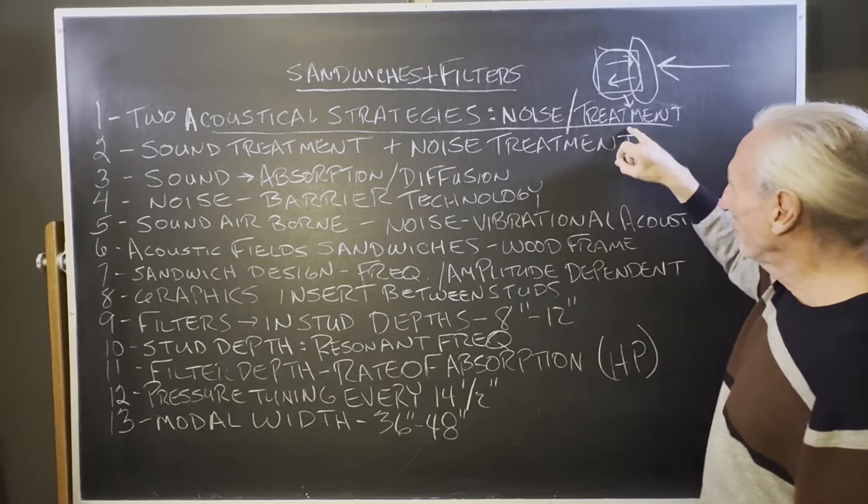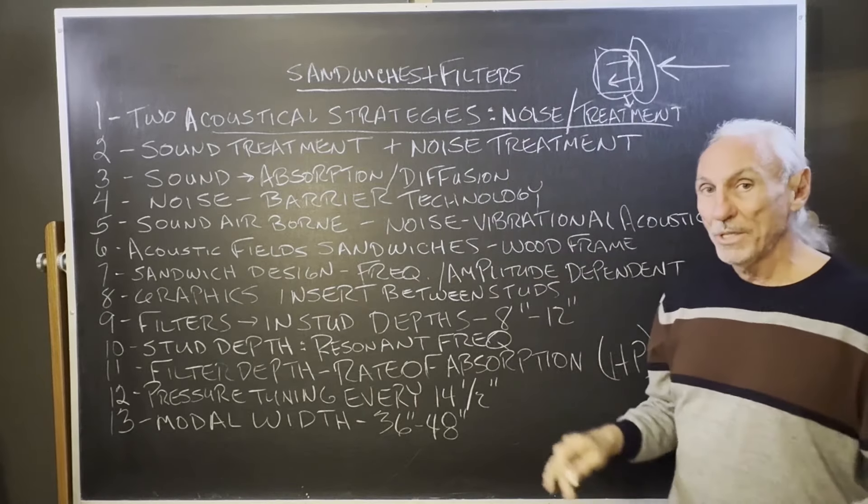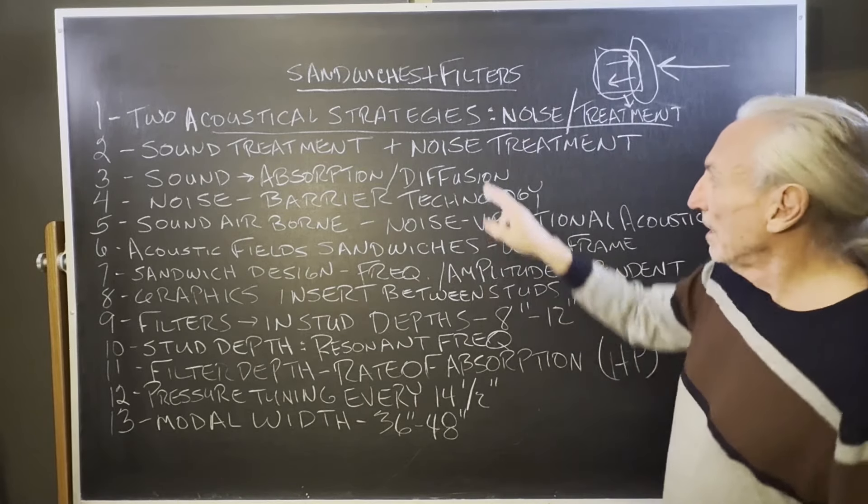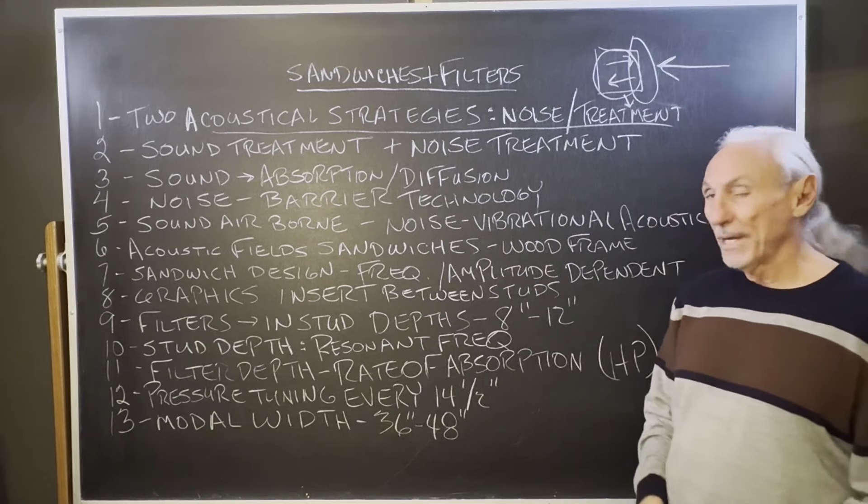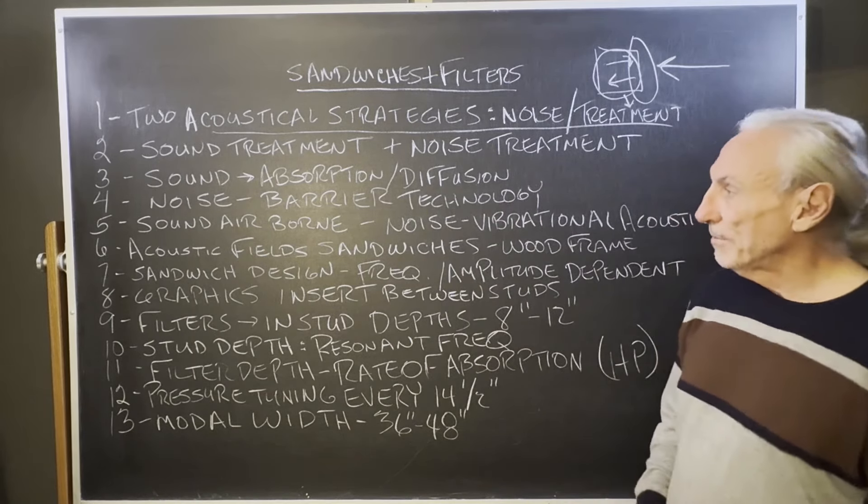So the inside is where we focus the treatment. The noise is on the outside. So noise is barrier technology. Treatment is absorption and diffusion. Those are your two differences here. That's what we need to focus on.